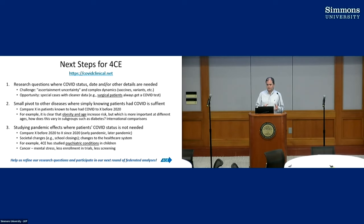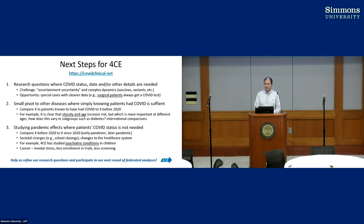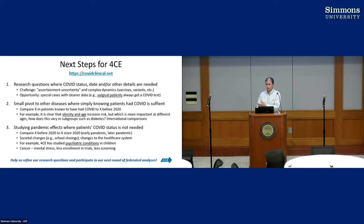There are special cases where you can have better trust in the data — for example, when patients go in for surgery they get a COVID test, so you know their status on a particular date and can follow outcomes. The second category involves small pivots to related diseases where you don't need as much COVID-specific information. For example, we're interested in obesity and age — both increase the risk of severe COVID, but it's not clear which is more important at different ages or how this varies by subgroups like patients with diabetes.